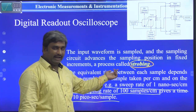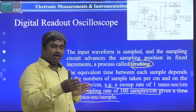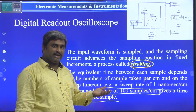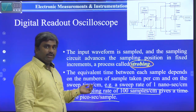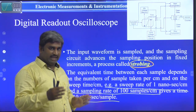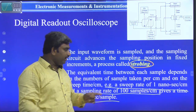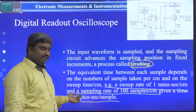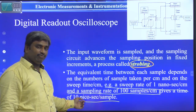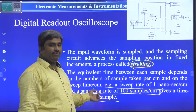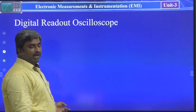The equivalent time between each sample depends upon how many samples per centimeter are framed. The sweep rate is the gap between the samples. A sweep rate of 1 nanosecond per centimeter with a sampling rate of 100 samples per centimeter gives a time of 10 picoseconds per sample. This is the sweep time for digital readout oscilloscopes.